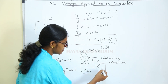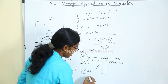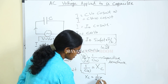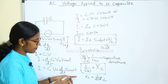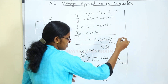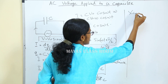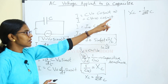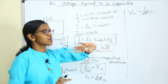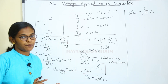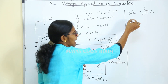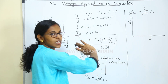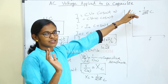So Xc equals 1/(Cω). Since ω equals 2πf, this becomes Xc equals 1/(2πfC). The capacitive reactance is inversely proportional to frequency. As frequency increases, the value of capacitive reactance decreases.